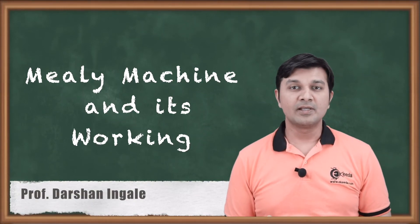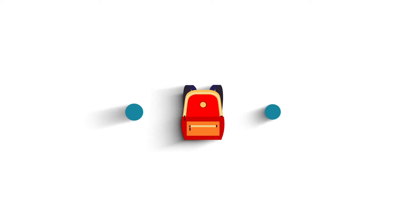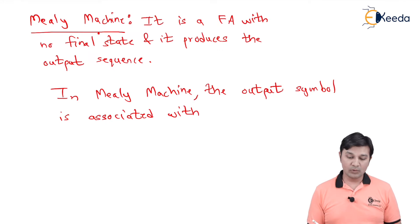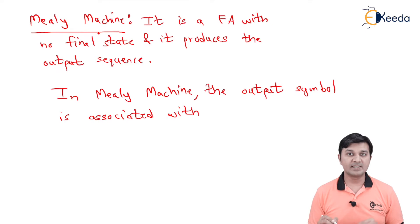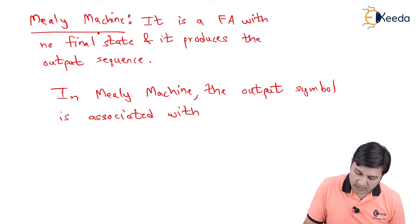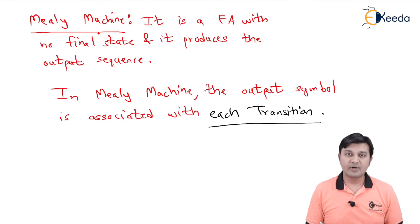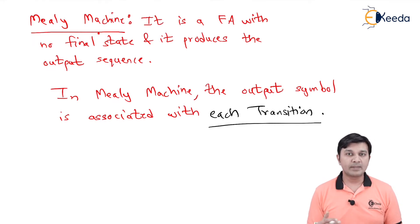Hello friends, welcome to the next session. Having understood what is Moore machine, let's dive into understanding what is Mealy machine. In Mealy machine, it is a finite automata with no final state, and it produces an output sequence. The key difference is that in Mealy machine, the output symbol is associated with each transition, whereas in Moore machine, the output is associated with each state.